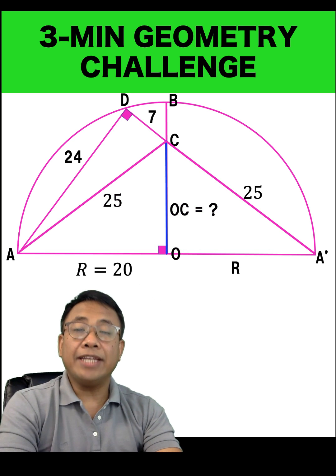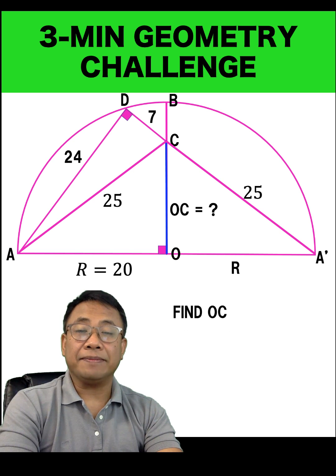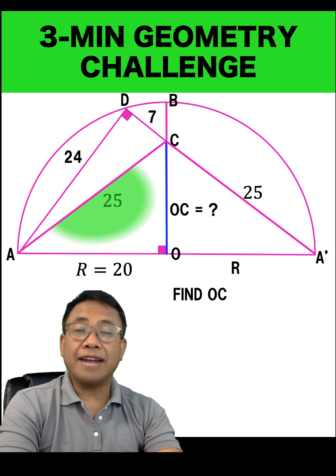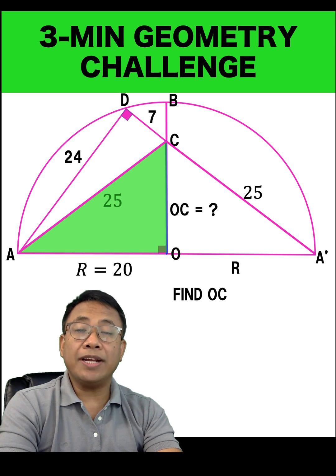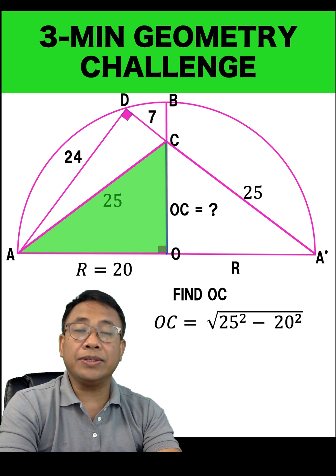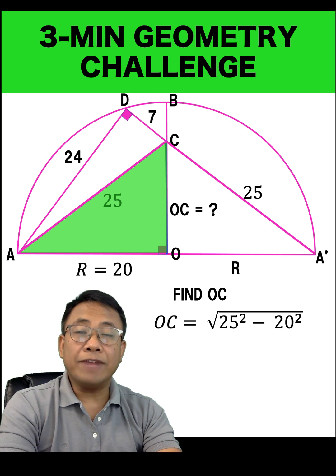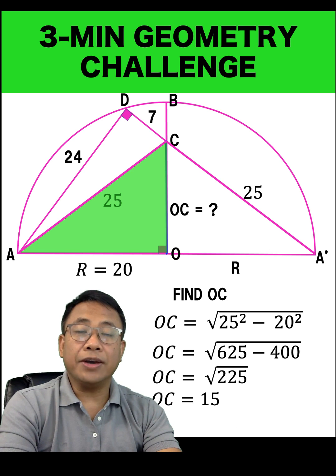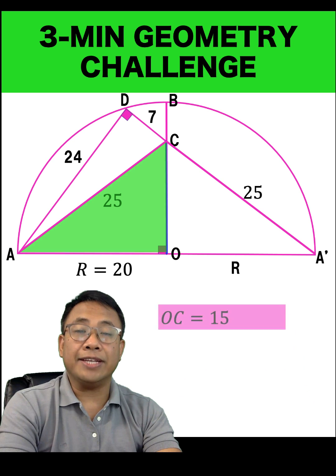Now we are ready to find the length of OC. Let's concentrate on the right triangle AOC. The measure of the hypotenuse AC is 25 units. The measure of one of the legs OA is 20 units. Using the Pythagorean formula again, OC is equal to the square root of the difference between the squares of 25 and 20, and solving for OC, we found that OC is equal to 15 units.